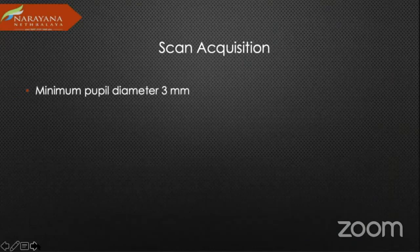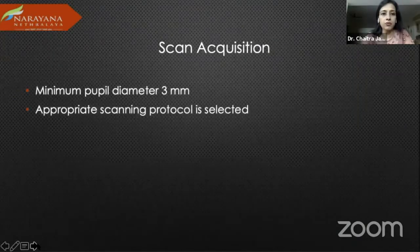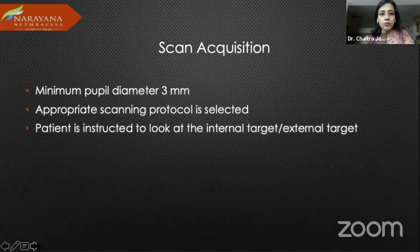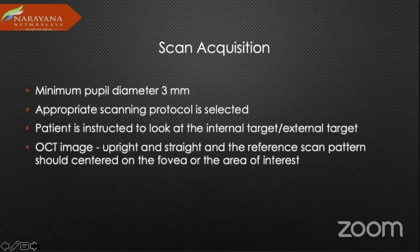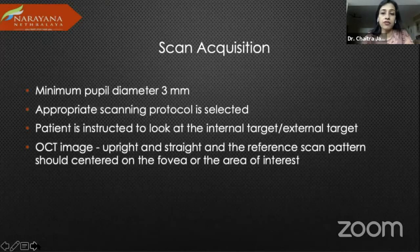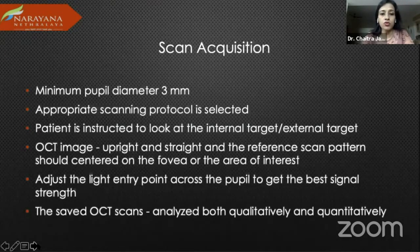For good scan acquisition, you should preferably have a well-dilated pupil, though we do get good scans even with smaller pupils. The appropriate protocol should be selected, and the patient should be instructed to look at the internal target. The OCT image should be upright and straight, and the reference scan pattern should ideally be centered on the fovea or area of interest. Adjust the light entry point across the pupil to get the best signal strength, and saved OCT scans should be looked at both qualitatively and quantitatively.